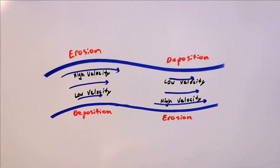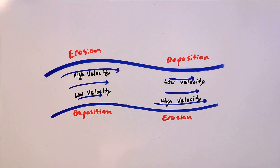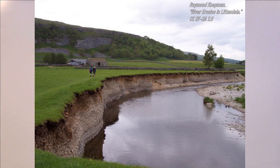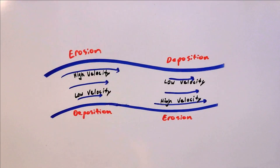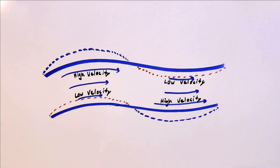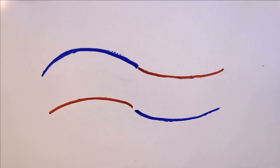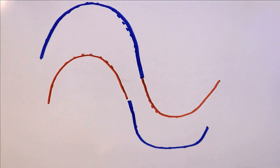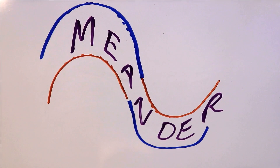We saw that high-velocity water causes erosion and low-velocity water causes deposition. So the outside bends, where water moves faster, will erode, while the inside bends, with slower-moving water, will deposit sediment. This process is easy to observe in actual riverbanks — you can see how the outside bend is cut away by erosion while the inside bend grows inward. If we fast-forward through time, the river becomes contorted and twisty in its floodplain. This phenomenon is what we call a meander: the river meanders because of the competing processes of erosion and deposition.